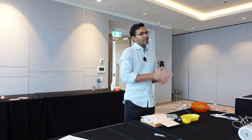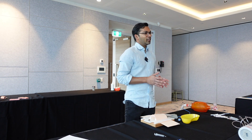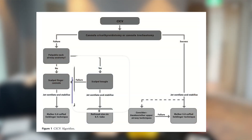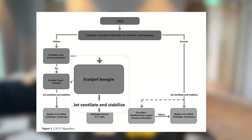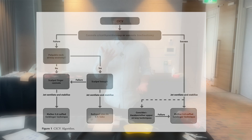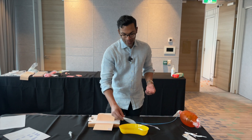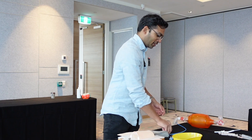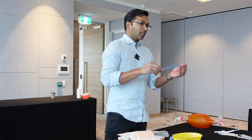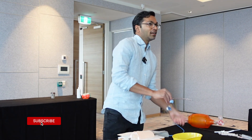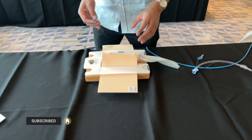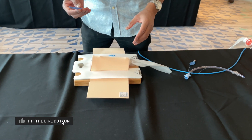This next technique applies when you've failed the needle cric technique or have chosen a surgical technique. Andrew Hurd's algorithm describes the scalpel-bougie technique. I really like this technique for its simplicity — you essentially just need three pieces of equipment: your scalpel, your bougie, and a size six tube.